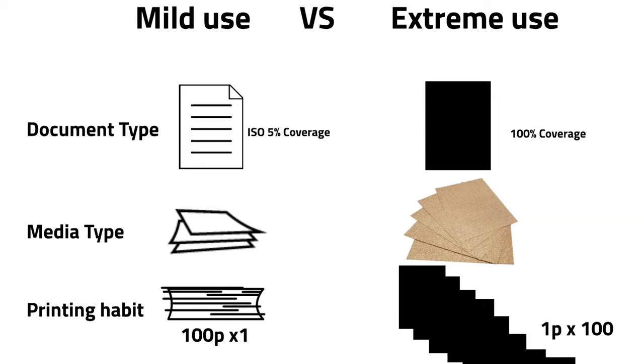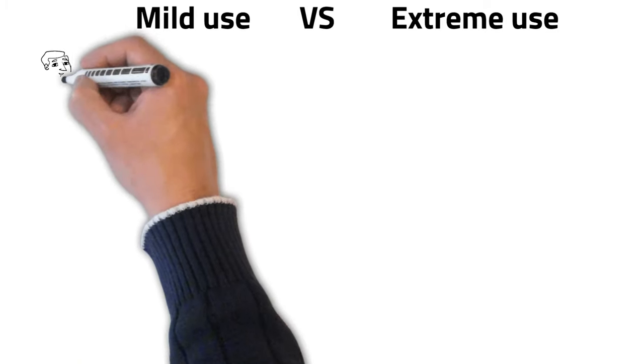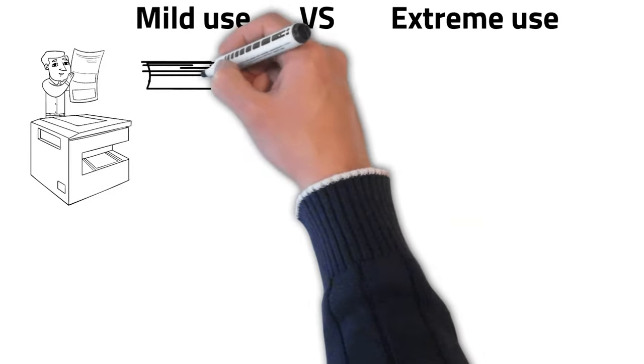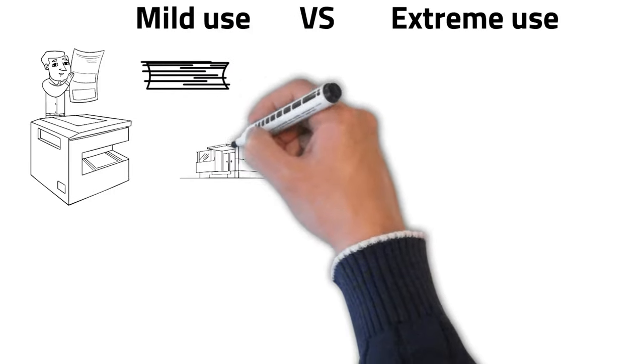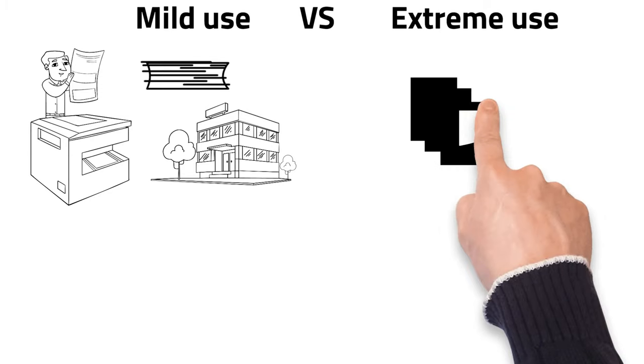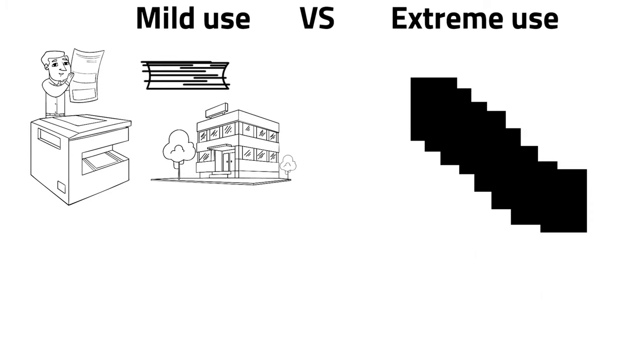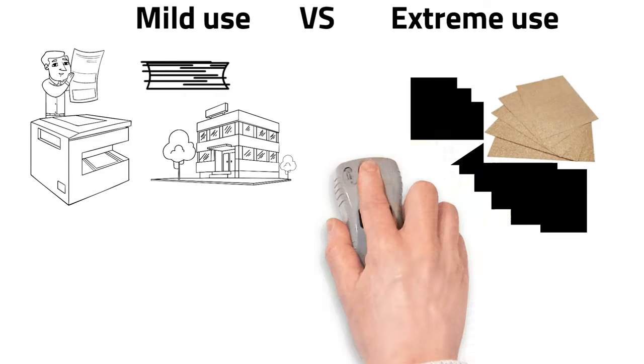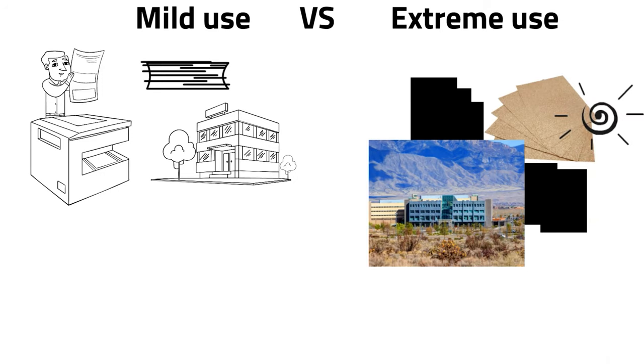In a mild-use scenario, imagine a user printing documents with very low coverage, such as invoices or short letters, on smooth, small, and thin papers in a well-maintained, air-conditioned office environment. Now, in an extreme scenario, imagine another user printing numerous one to two-page documents filled with solid images on very thick and rough large card stocks in an office situated in a desert environment without any air conditioning system.